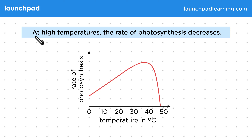High temperatures can make enzymes change shape, or denature, and stop working. When this happens, the enzyme becomes denatured and its shape is no longer complementary to the substrate, so the two can't fit together.